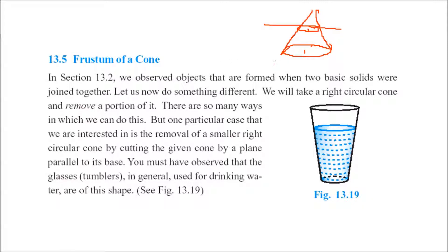We have observed that when these two basic solids are joined. Now, this is the situation when we are actually removing a portion — we are not joining but removing a portion. So, when we remove this portion and invert it, it becomes a kind of a glass. It is not a symmetric glass; this kind of glass you generally see. This is obtained by joining — this is actually a cone.